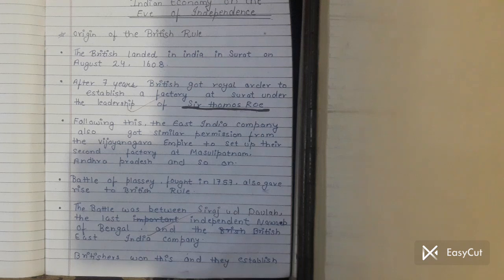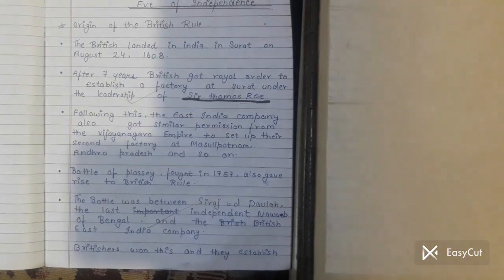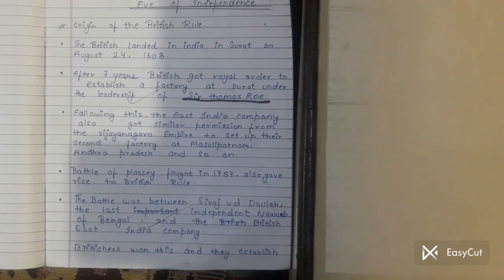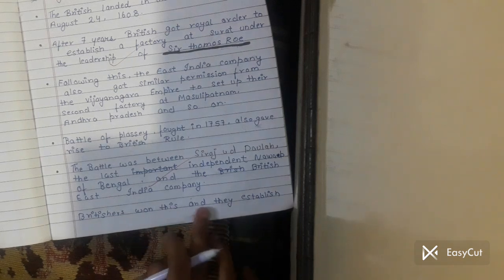The Battle of Plassey in 1757 also gave rise to British rule. The Battle of Plassey was between Siraj ud-Daulah, the last independent Nawab of Bengal, and the British East India Company. The British won this and established their rule.